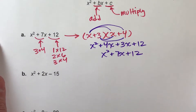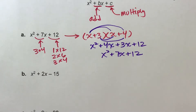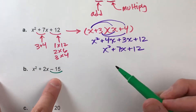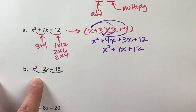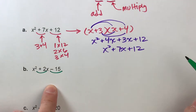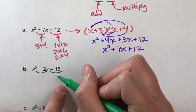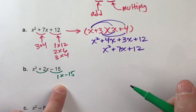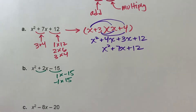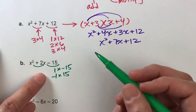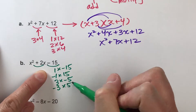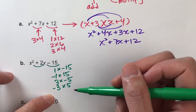Now for some harder ones where negatives come into play. We've got x squared plus 2x minus 15, so we need two numbers that multiply to get negative 15 but add to get positive 2. With negative 15, one factor could be positive and the other negative. For example, 1 times negative 15, or negative 1 times positive 15. Similarly, 3 times negative 5 and negative 3 times positive 5 — and that's all the whole-number options.